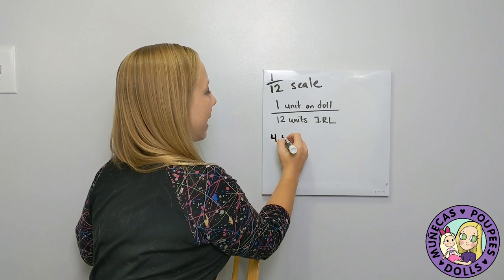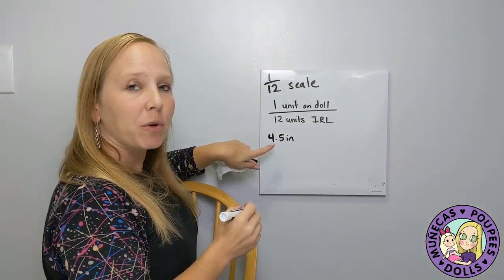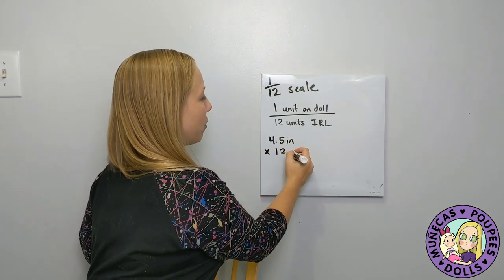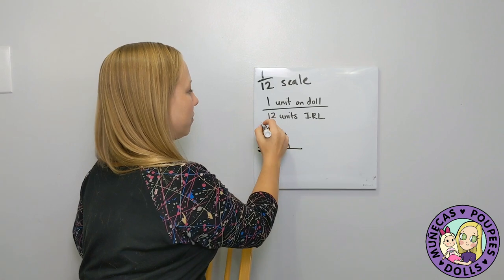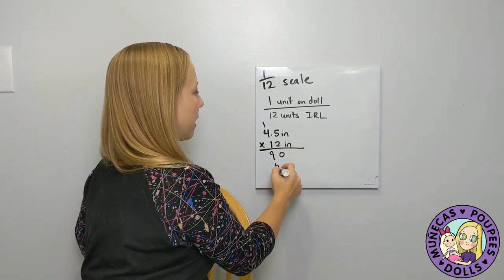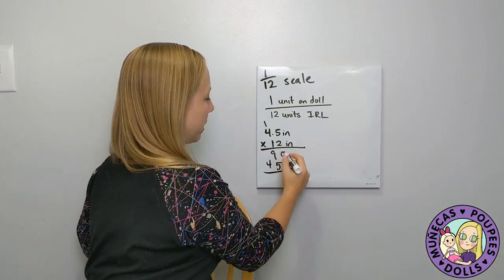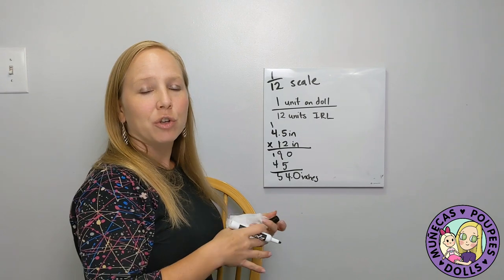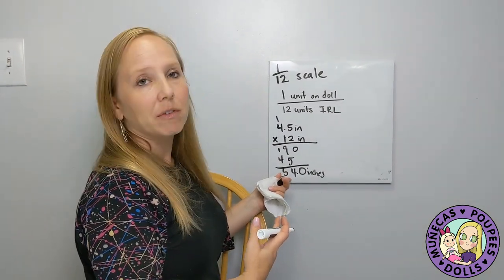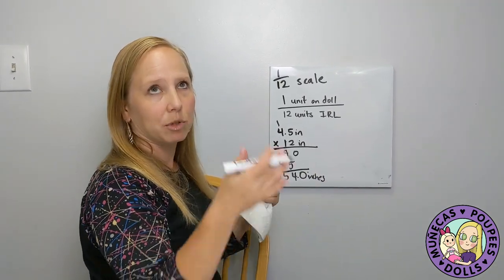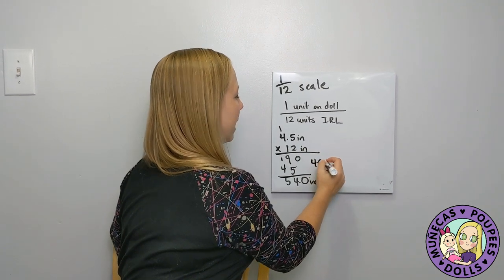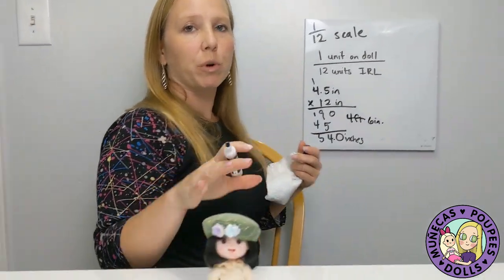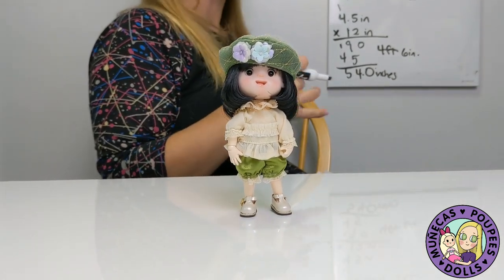She's four and a half inches tall, and in 1/12 scale every inch equals 12 inches — which is a foot. So four and a half times 12 gives us 54 inches. Dividing by 12: four times 12 is 48, so that's four feet with six inches left over. This doll in real life would be four feet six inches tall.